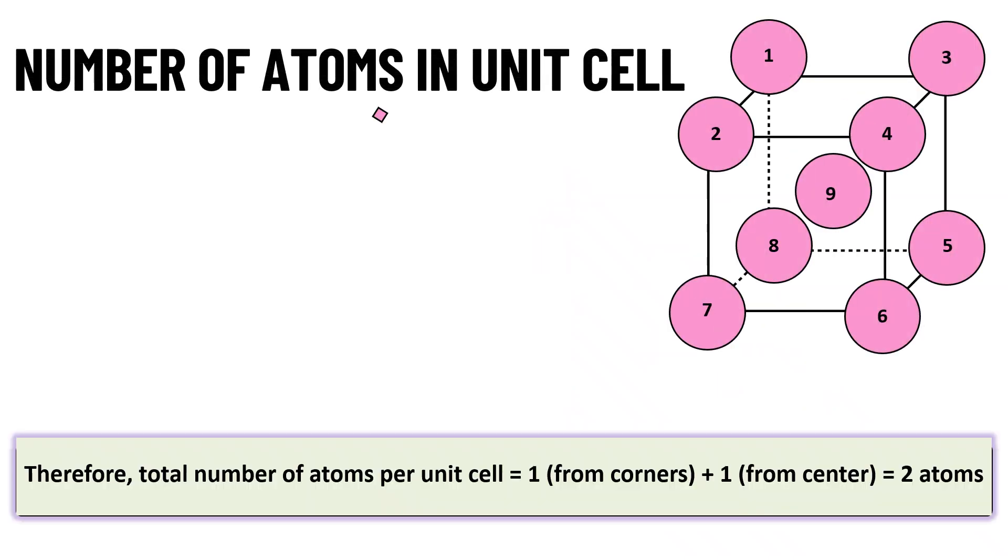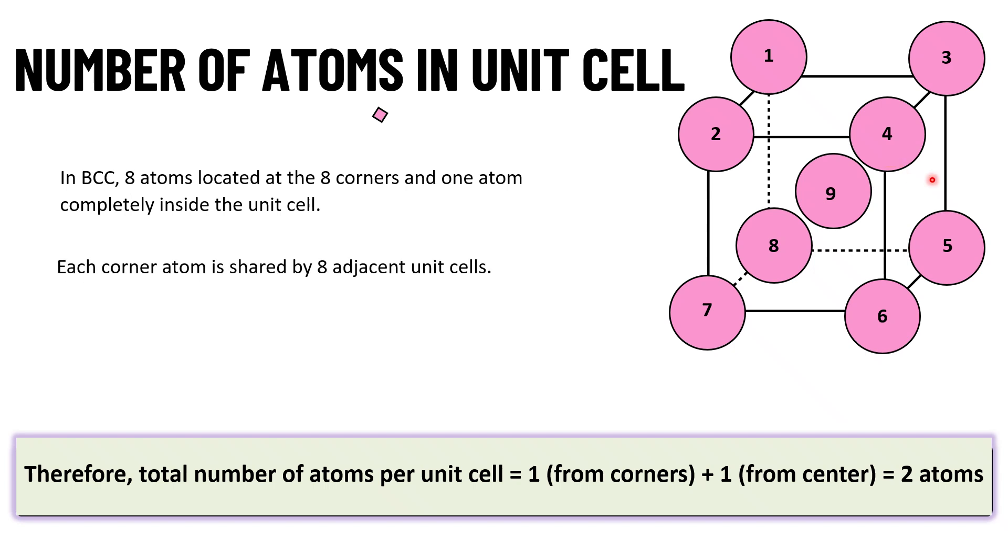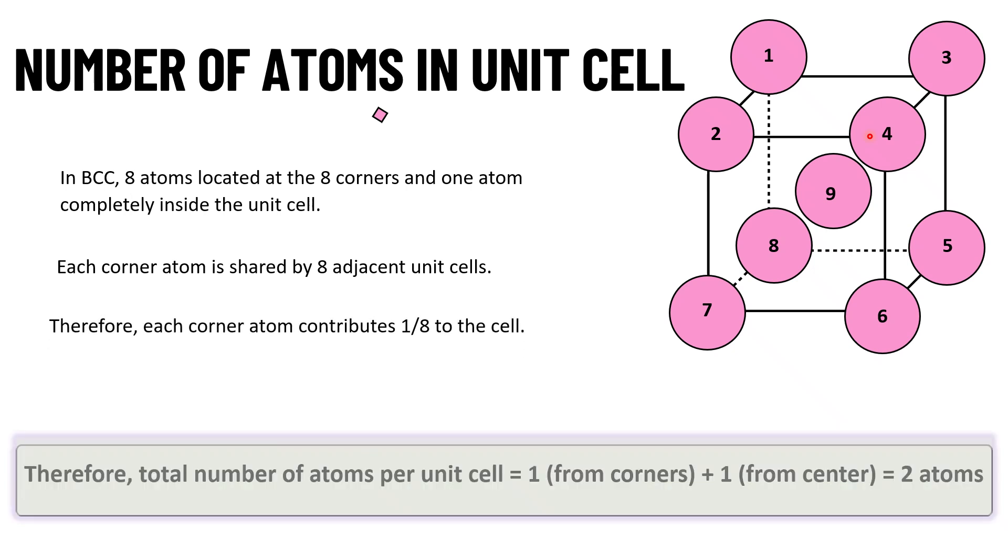Now let us see how many atoms are contributed in the given unit cell. We have seen there are 8 atoms at the corners of the unit cell and one atom is completely inside the body. 8 corner atoms are shared by 8 adjacent unit cells and therefore there will be the 1/8 contribution to the given cell.